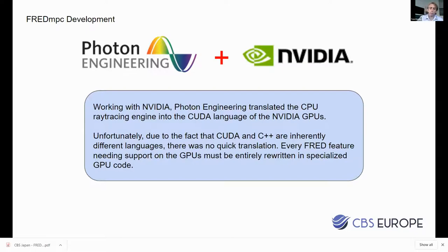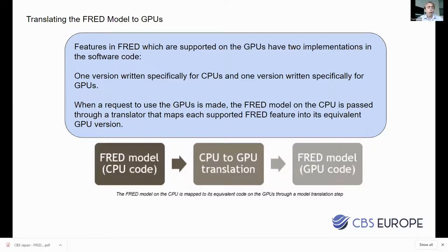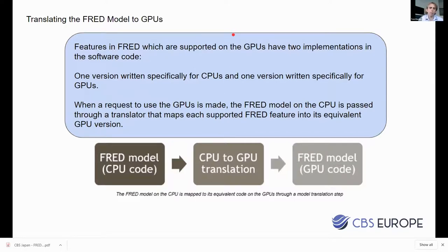It wasn't a straightforward conversion from FRED's C++ code to the CUDA code of GPUs. Because the languages were so different and the level of detail required was high, there was no quick translation — every FRED feature needed to be completely rewritten from scratch in GPU code. This took a couple of years and is probably why no other major ray tracing competitors have done this yet. Inside FRED MPC, there are now two versions of the code: any supported feature is written both in C++ for the CPU and in GPU code.